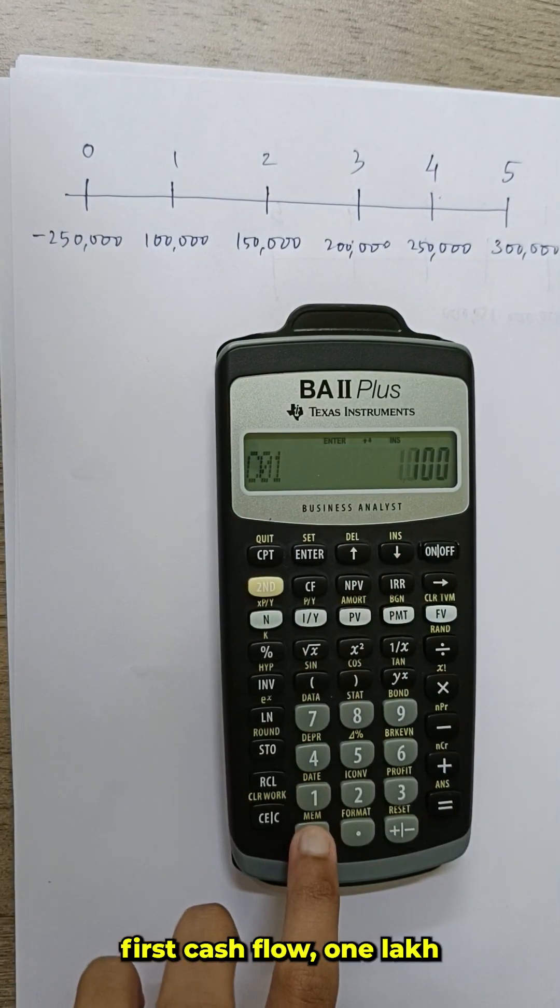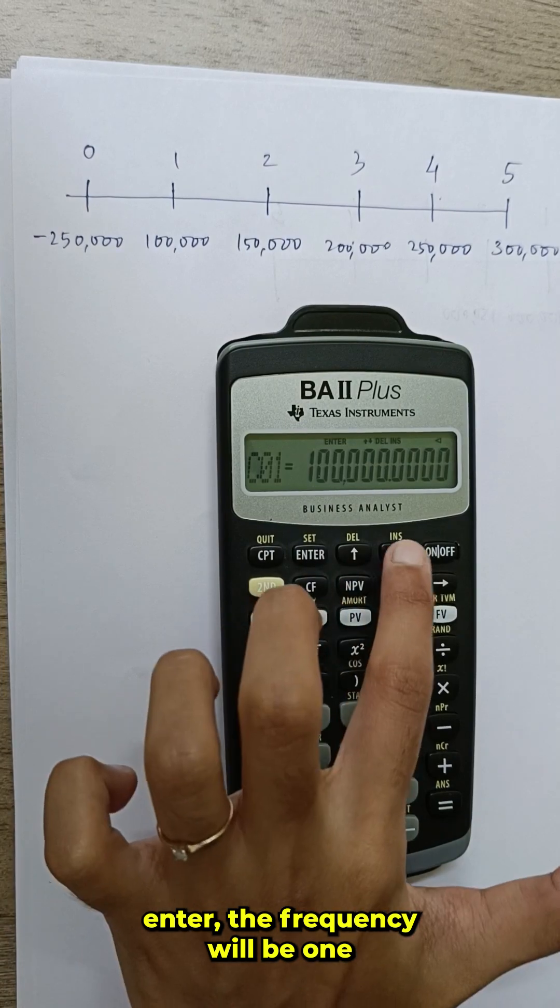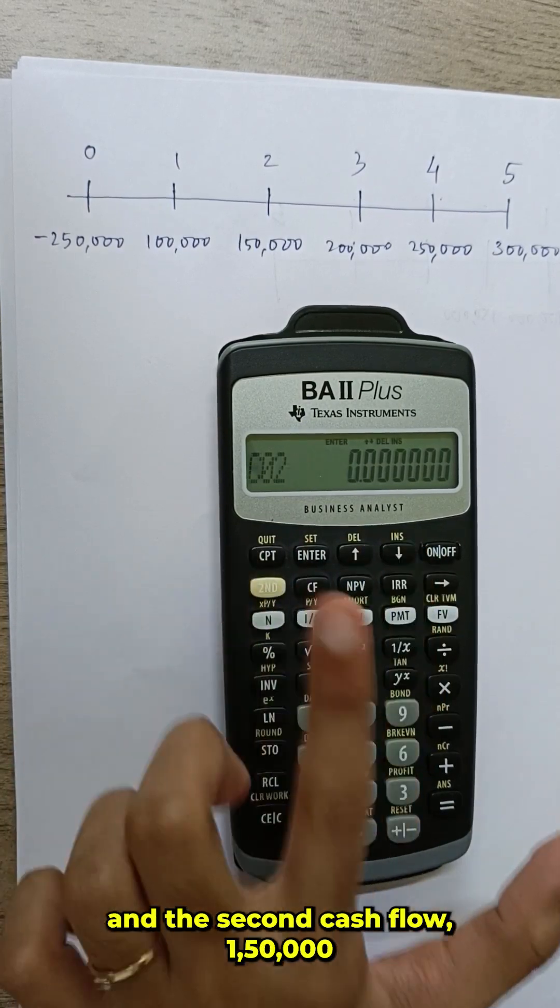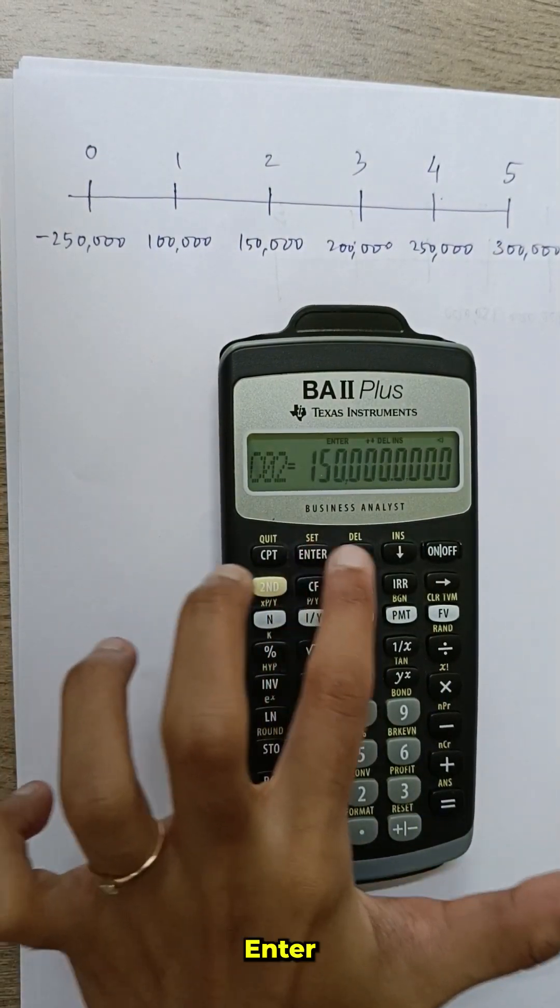First cash flow 1 lakh, enter. The frequency will be 1 and the second cash flow 1 lakh 50,000, enter.